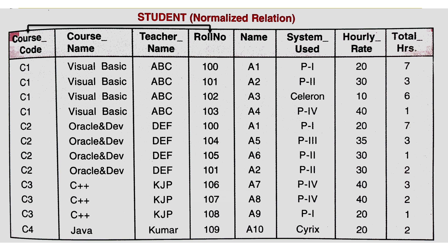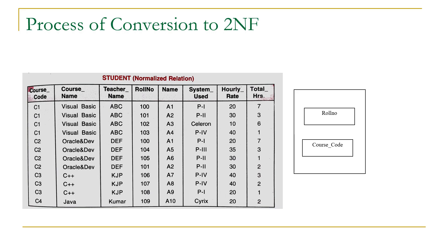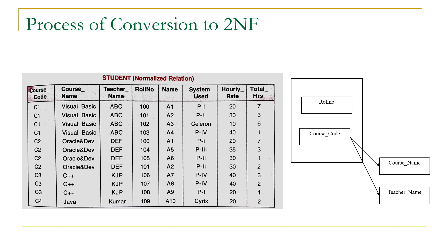The first step is to identify the primary key — which is the combination of course code and roll number. We draw a box containing course code and roll number as the primary key. For the non-key attribute course name, we get one value per course code: C1 is VB, C2 is Oracle and Developer, C3 is C++, C4 is Java. Similarly, we get one value of teacher name for each course code. So course name and teacher name are functionally dependent on course code.